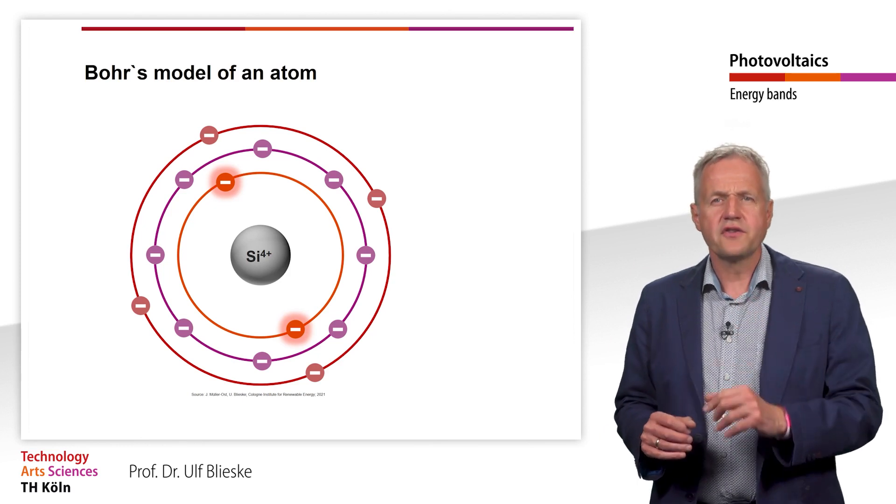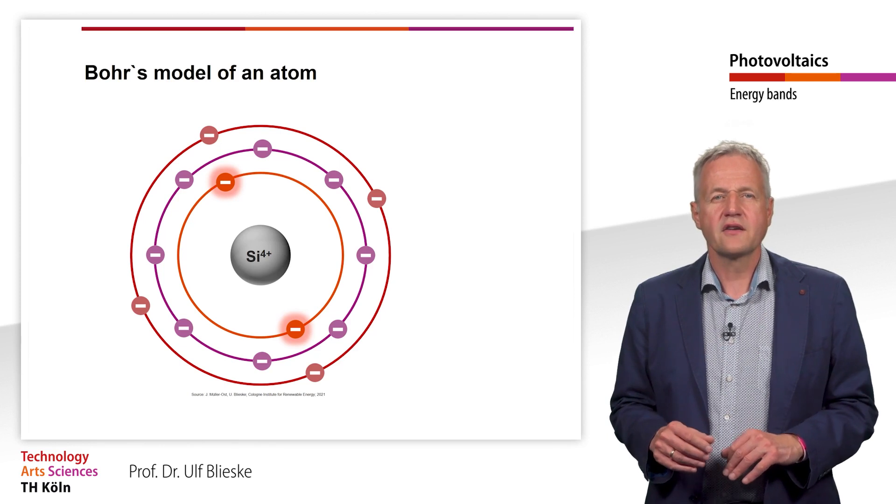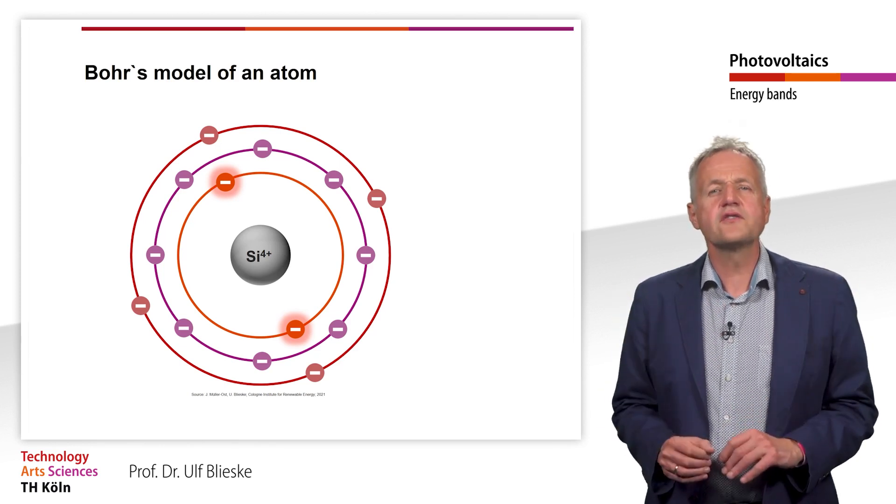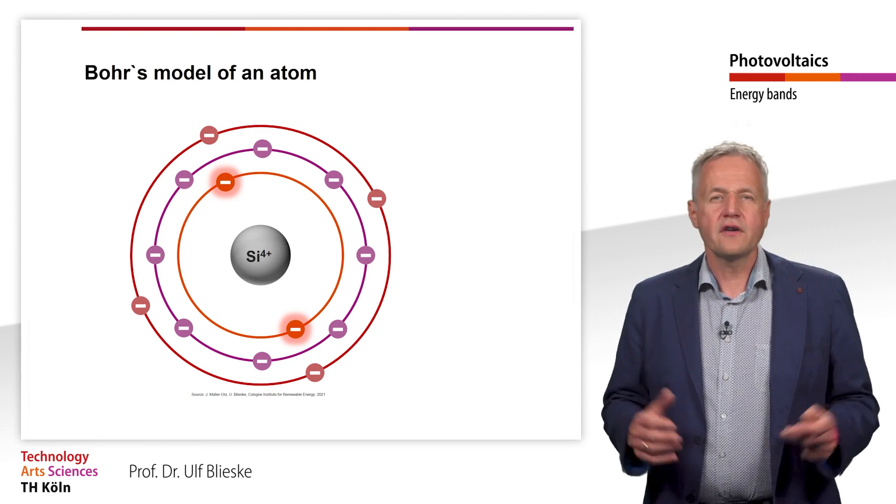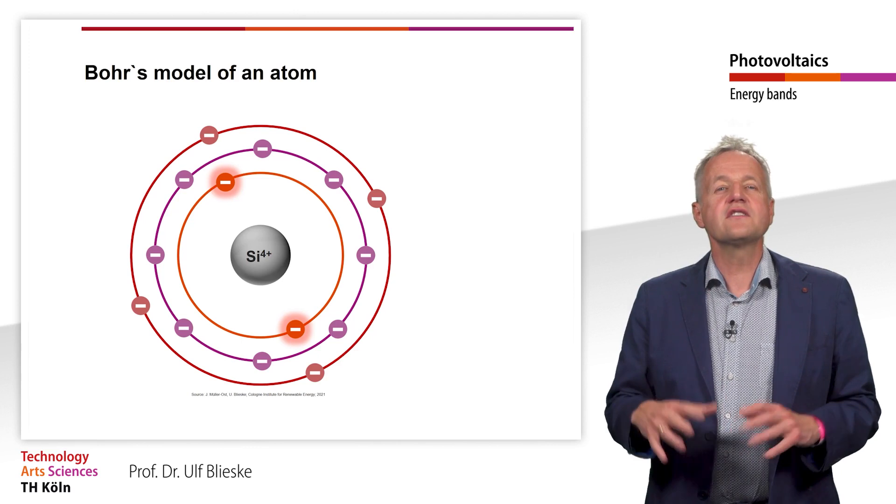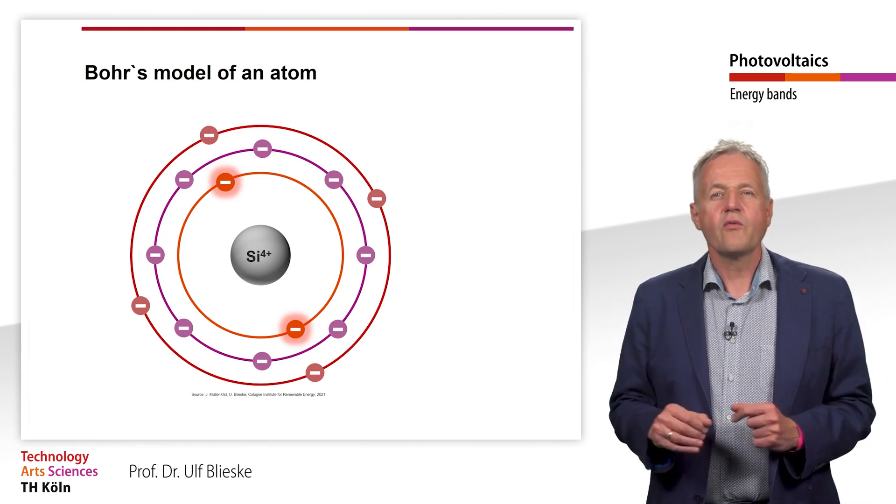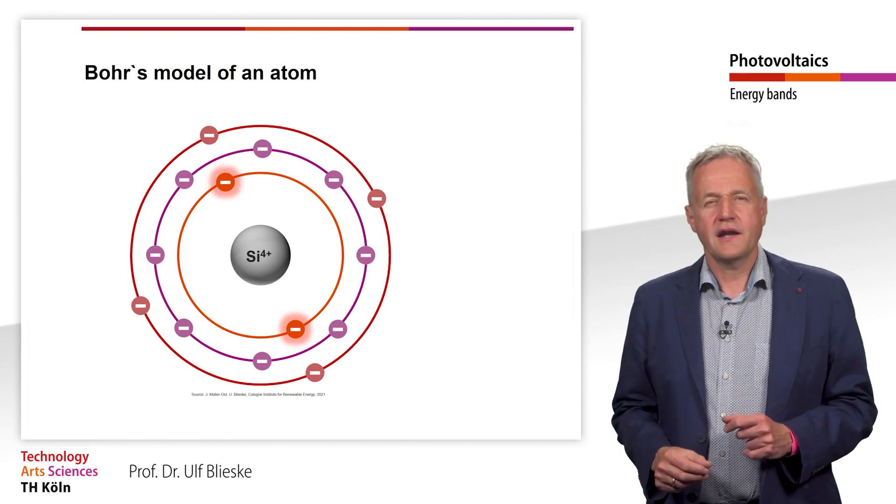There are two electrons in the innermost shell. The shell is fully occupied. The second shell is also fully occupied with eight electrons. However, there are only four electrons in the third shell. If the shell were fully occupied, there would still be four more electrons.